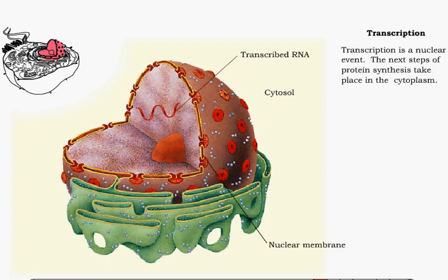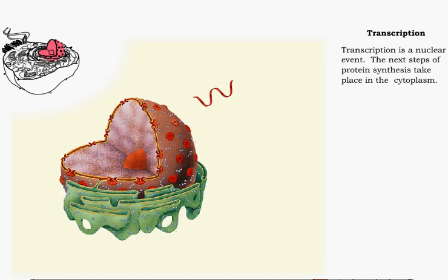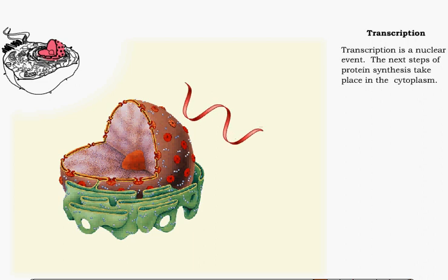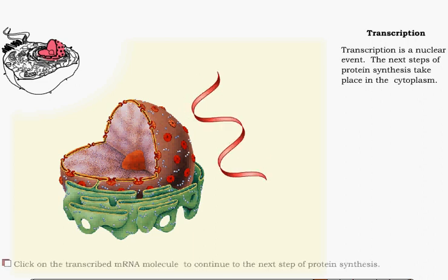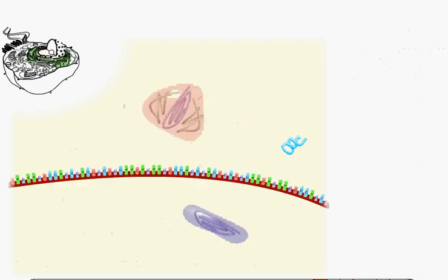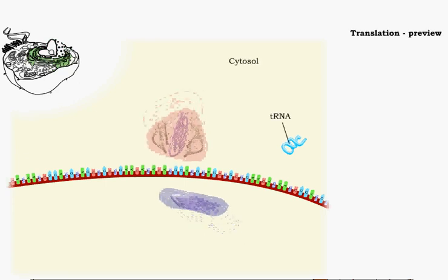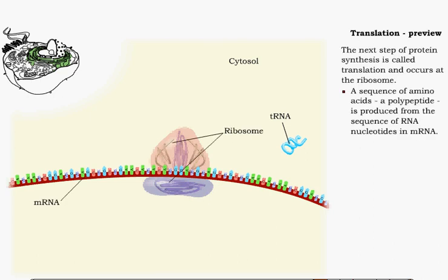Transcription is a nuclear event. The next steps of protein synthesis continue in the cytoplasm. The ribosome is responsible for the next step of protein synthesis, which is called translation. Here, the message in the RNA strand is translated into a sequence of amino acids, or a polypeptide.